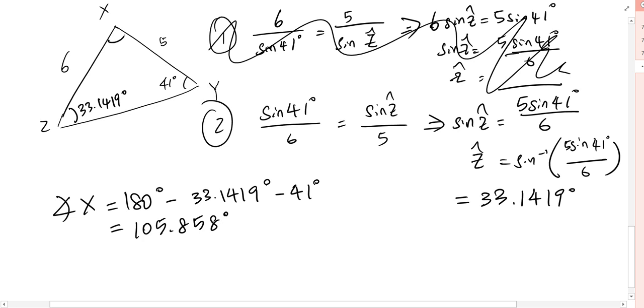So with this, I can now find the length of ZY by using my sine rule again. Okay, so now, should I use the variation where I have the length on top or the angle on top? Length on top. Because I want to find length. So I put length on top. So, ZY over sine 105.858 equals to?